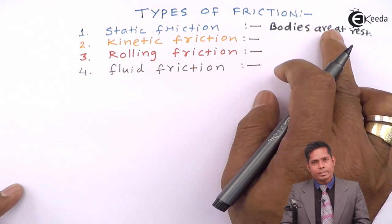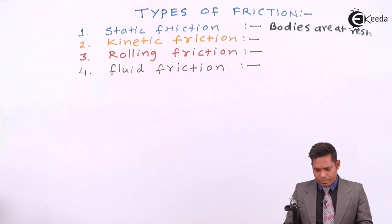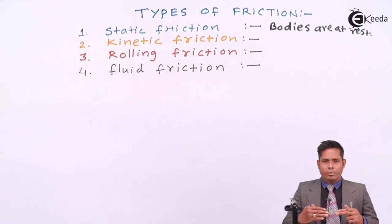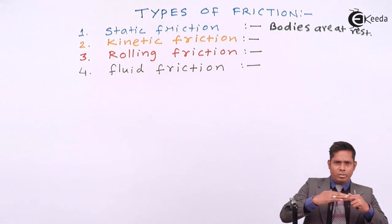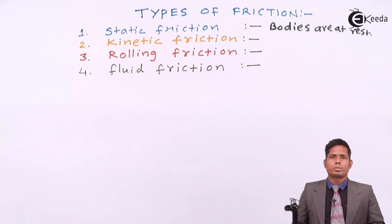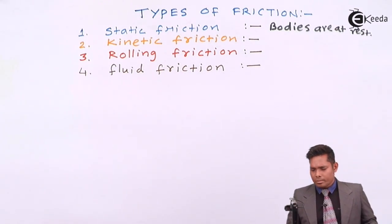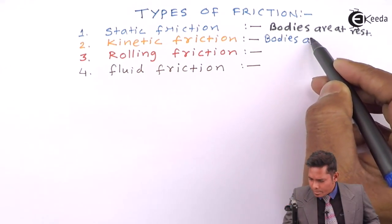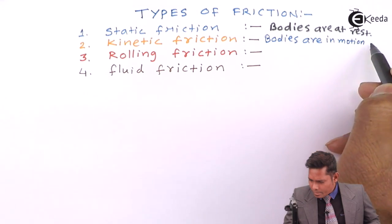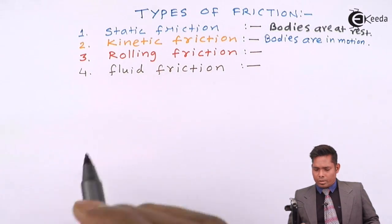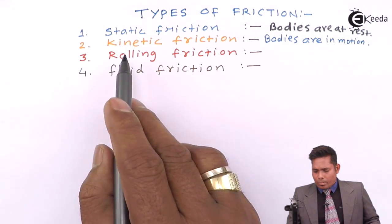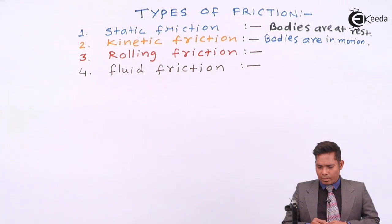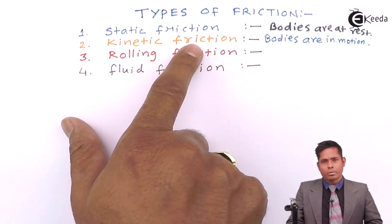Static friction acts when bodies are at rest — there is a tendency of relative motion but the bodies are at rest. Kinetic friction acts during motion, when one body is moving relative to another on its surface. When one body slides over another and it starts sliding, kinetic friction comes into picture.